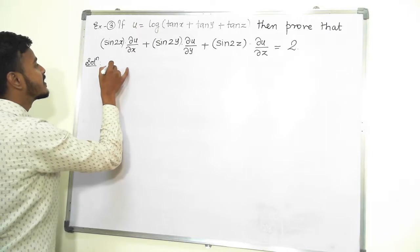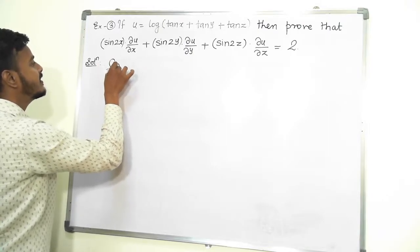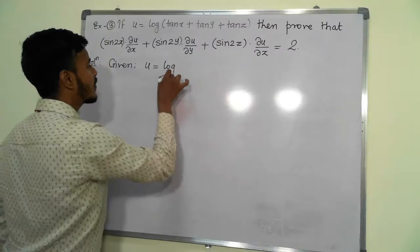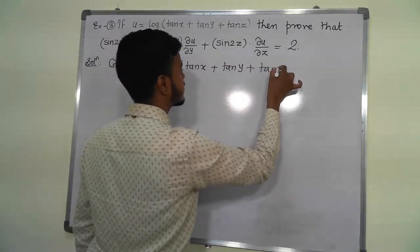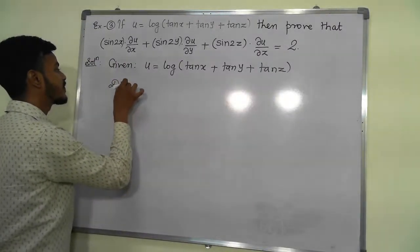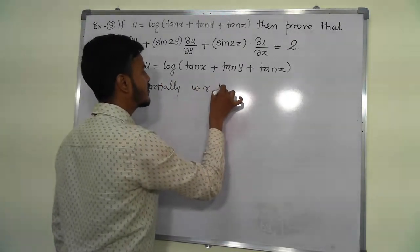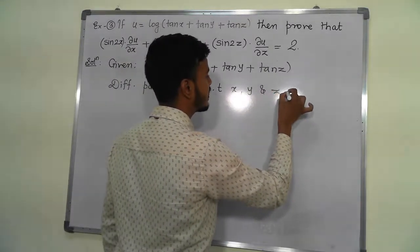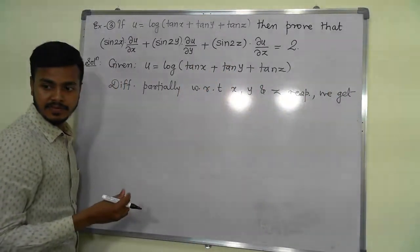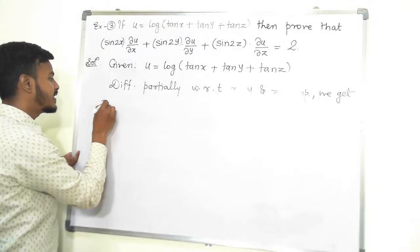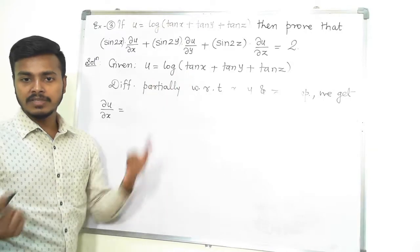So let us differentiate. Given u is equal to log of tan x plus tan y plus tan z. Now differentiating partially with respect to x, y, and z respectively, we get the first derivative del u by del x.